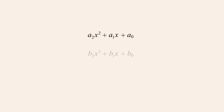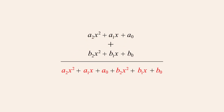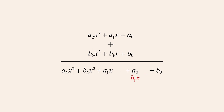To add polynomials, we add all the individual terms, rearranging the terms in order of decreasing exponents, and combining terms that contain the same variables raised to the same powers.